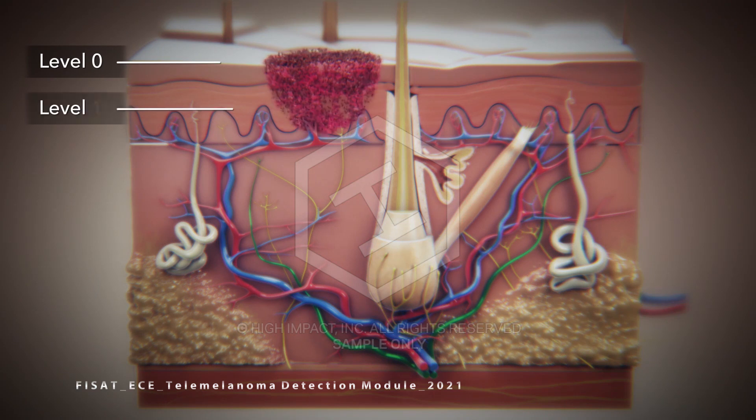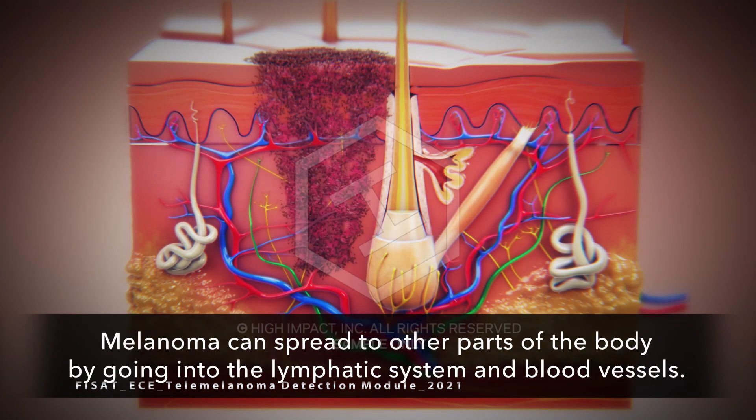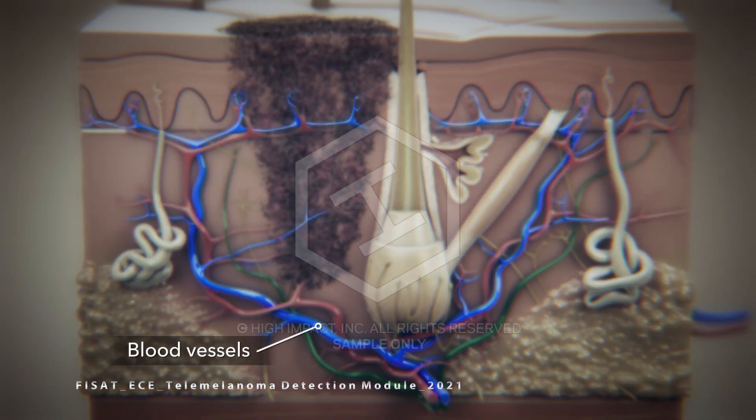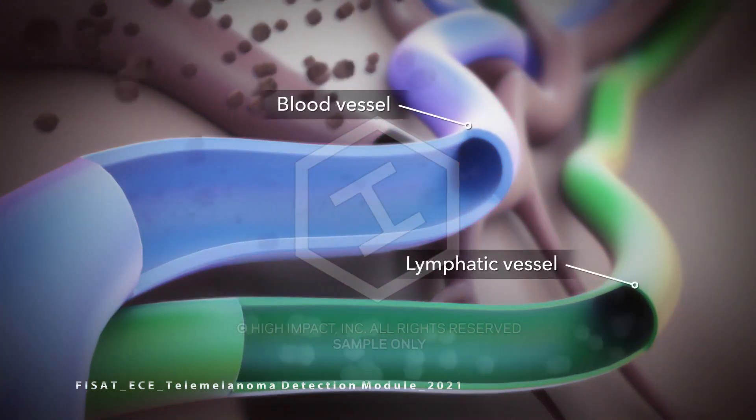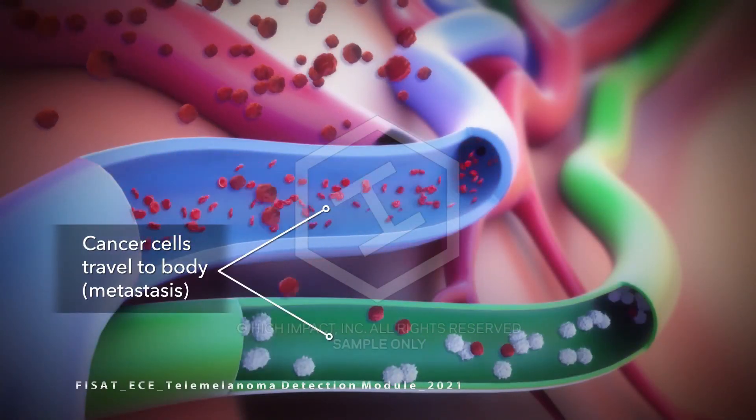The Clark level is a staging system that describes the depth of melanoma as it grows in the skin. Melanoma can spread to other parts of the body by going into the lymphatic system and blood vessels. The first place a melanoma tumor metastasizes to is the lymph nodes by draining melanoma cells into the lymphatic fluid.